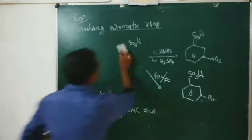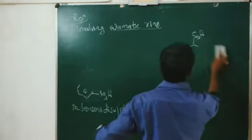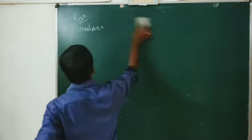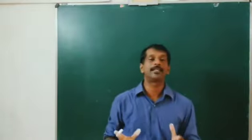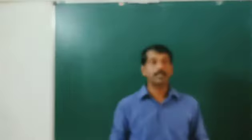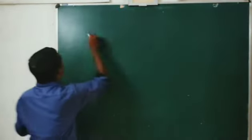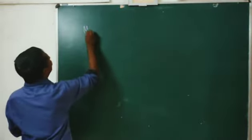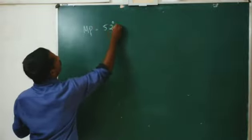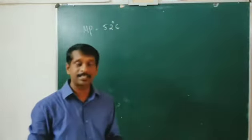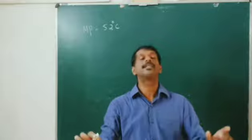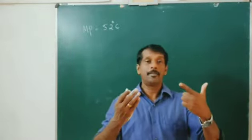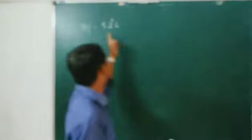One more point: the physical properties. Benzene sulphonic acid is a white crystalline solid, soluble in water. The melting point of benzene sulphonic acid is 52 degrees Celsius — a very low melting point. The reason is that in benzene sulphonic acid there is no intermolecular hydrogen bonding, and that is why benzene sulphonic acid has a low melting point.